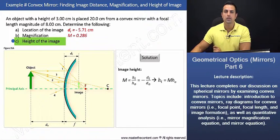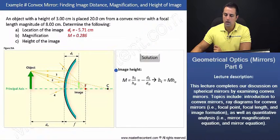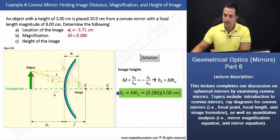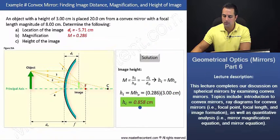Now we'll find the height of the image, and let's just get right into it. For the height of the image, it's simply just going to be our magnification equation, and we can solve for the height of the image. Once we fill in our values for magnification and the height of the object, which is 0.286 and 3 cm respectively, we find that the height of the image is going to be 0.858 cm.